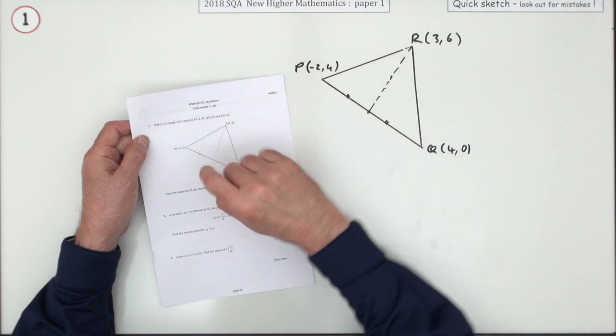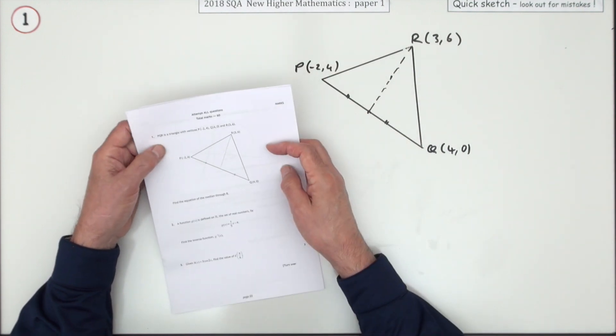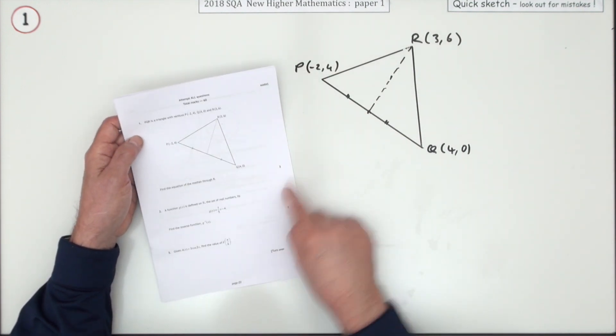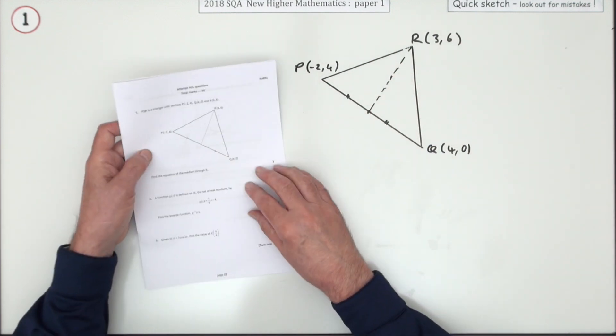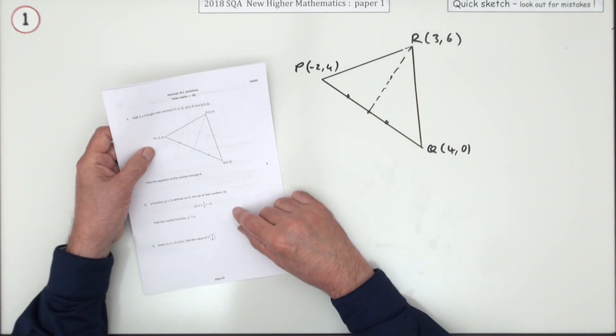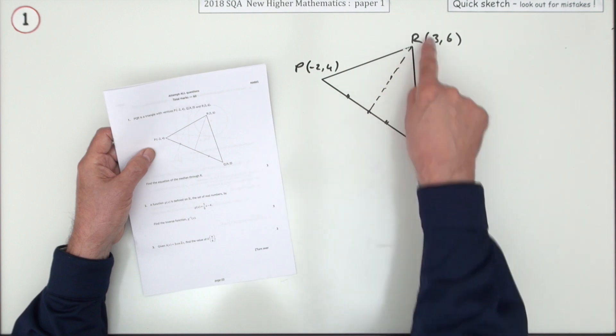Number one. The first question in paper one of the 2018 higher maths, three marks for a line in a triangle. Just a quick sketch here, rushing through this, it'll be replaced later. You're given this triangle PQR.